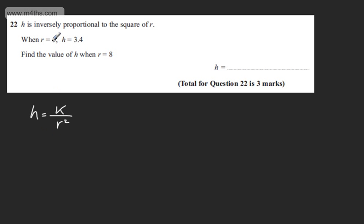If we substitute in the initial conditions, we can say that 3.4 equals K over R squared, which is 25. So from here, we can see that K equals 25 times 3.4.